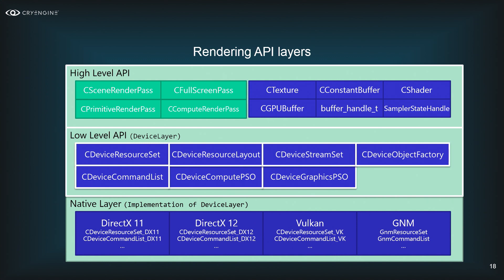The high-level API has four major classes for drawing and rendering. The scene render pass is a high-performance pass for drawing hundreds to thousands of objects sent by the 3D engine. The full screen pass issues a full screen triangle or quad. The primitive pass renders multiple primitives into a render target. The compute render pass issues a dispatch. On the resource side: CTexture represents a texture, CConstantBuffer a constant buffer, CShader a shader, CGPUBuffer a general GPU buffer, and SamplerState for sampling configuration.